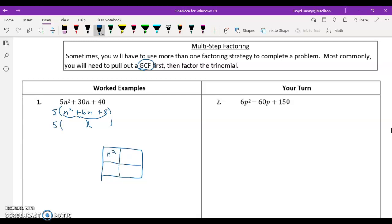I'll put my squared term in the upper left and I'll put my constant in the lower right. Then I'll find my a times c, and that's going to give me 8n squared. And then my middle term goes at the bottom.